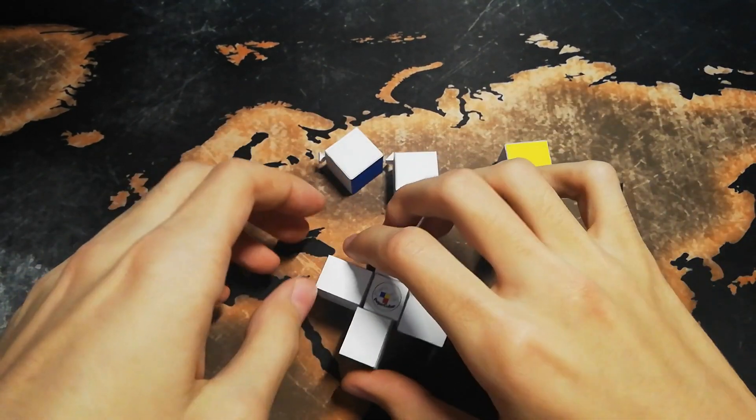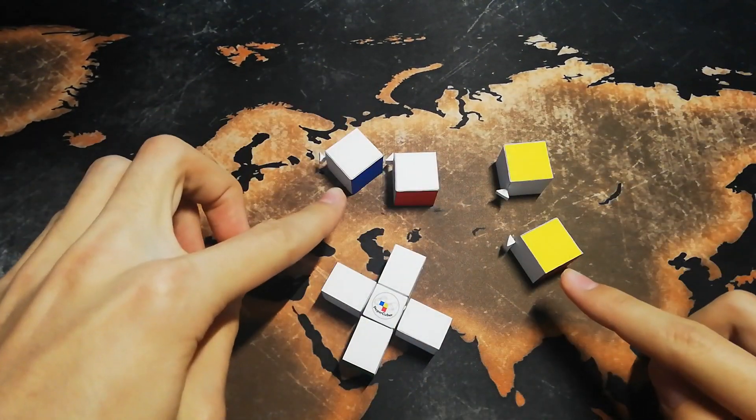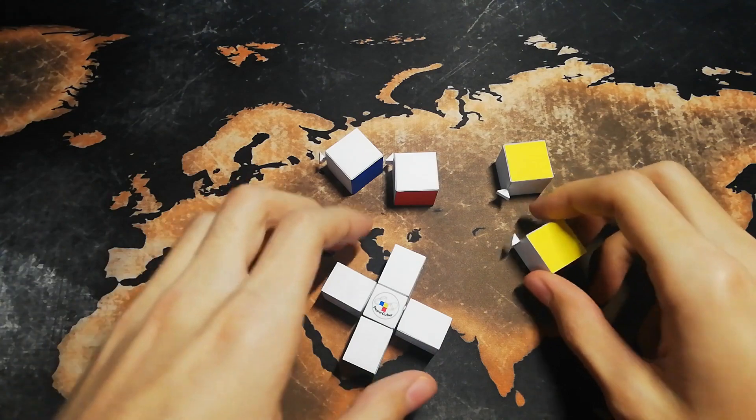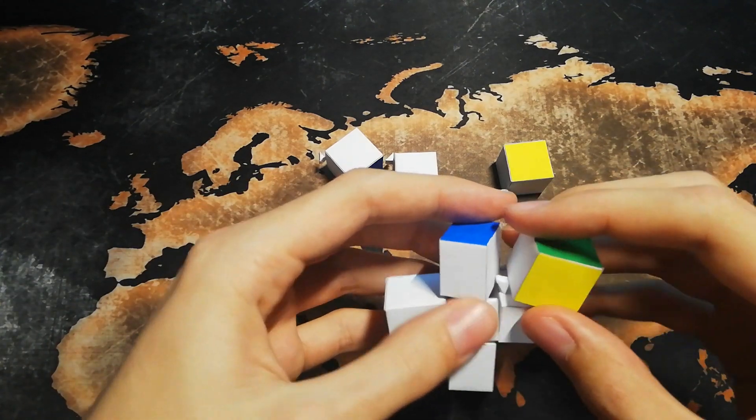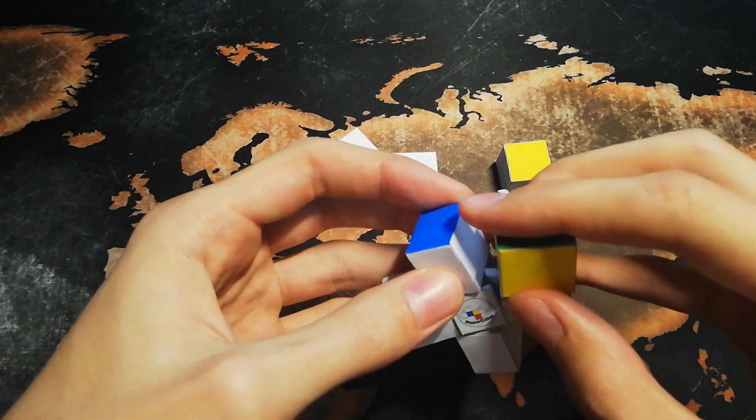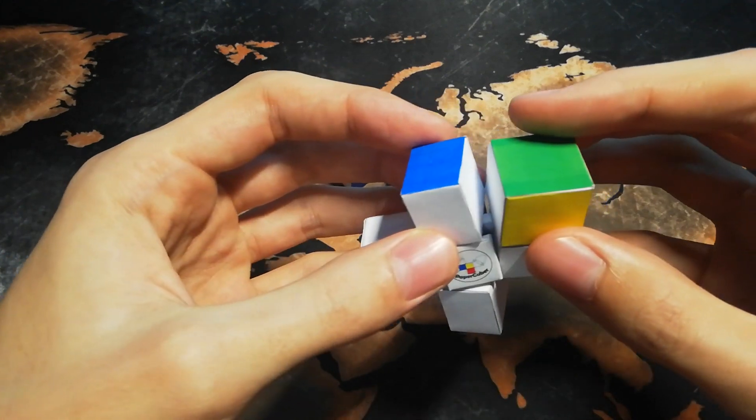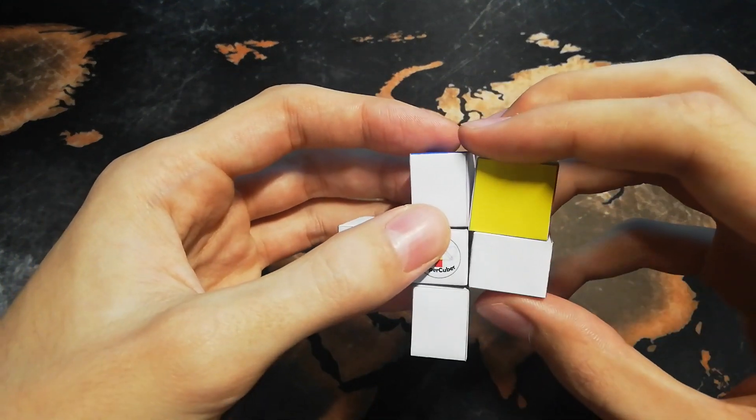The only four pieces that can really move around the puzzle are these four edges. They hook under the centers, like this, so that they are held in place.